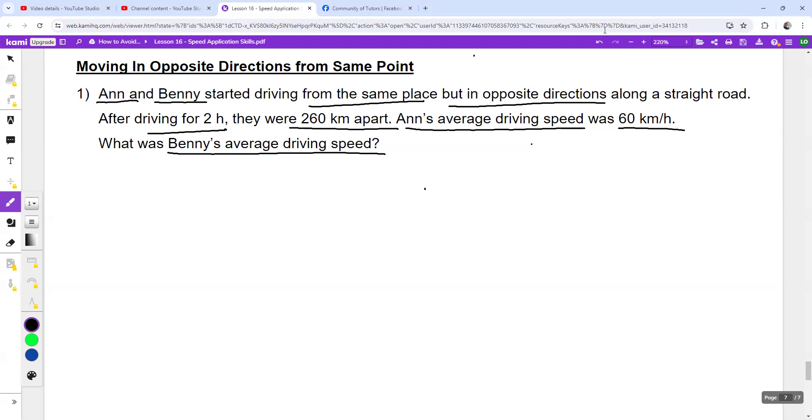So if you use your fingers to show, you will find that your fingers will start from the same place. So this is the starting point where they start at the same place and then they go opposite directions. So one person goes to the left and the other person goes to the right. So you have Ann towards the left and Benny is towards the right. So that is your 2 parts.